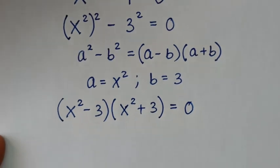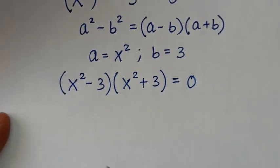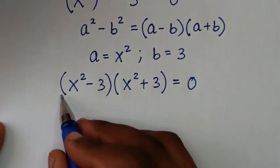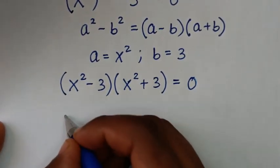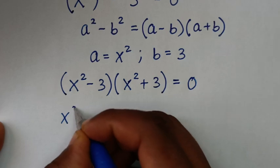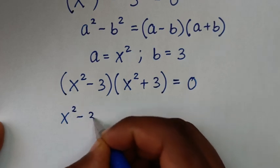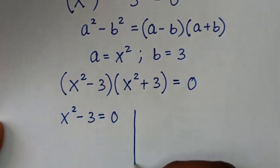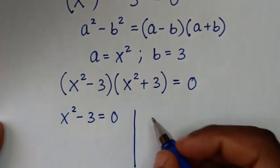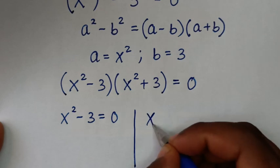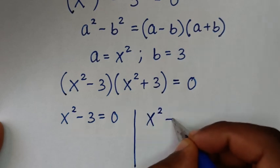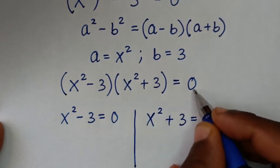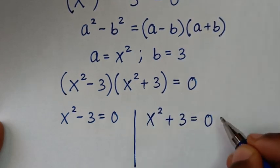In the next step, from here we have two solutions. The first solution is x-squared minus 3 equals 0, and the second solution is x-squared plus 3 equals 0.